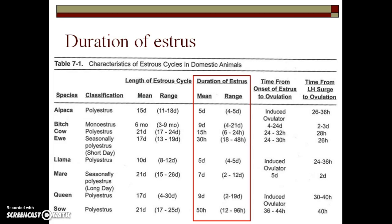Table 7.1 shows some characteristics that are associated with the estrous cycles in domestic species. I want to focus your attention to the column shown in red. Note that the time a female exhibits estrus differs among species. Alpacas, for example, will display estrus from anywhere from 4 to 5 days. A cow, however, will only display estrus anywhere from 6 to 24 hours. And a mare will display estrus for anywhere between 2 to 12 days.